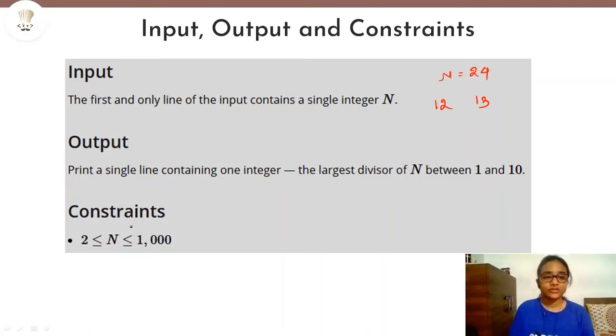Then the constraints, you can see the constraints are too low. N lies between the range of 2 to 1,000 only. And it does not matter because you are only running a loop for 10 numbers because you're only checking for 10 numbers whether N is divisible or not. So the time complexity here will be order of 10, which is very small. Easily this question will get accepted as the answer.